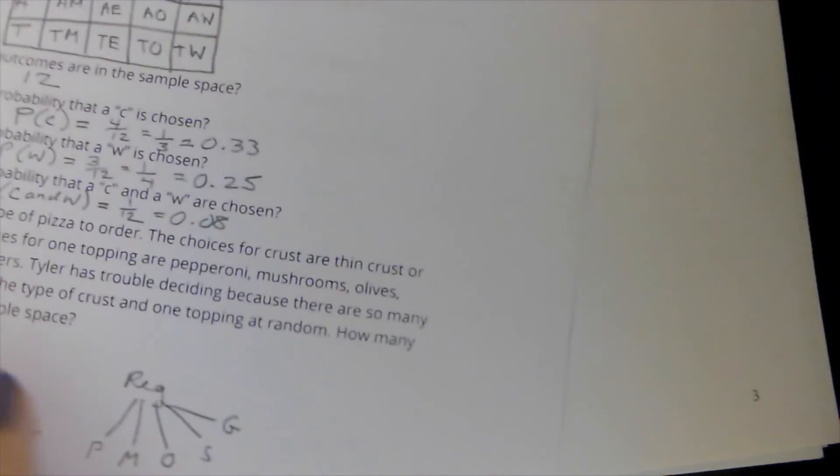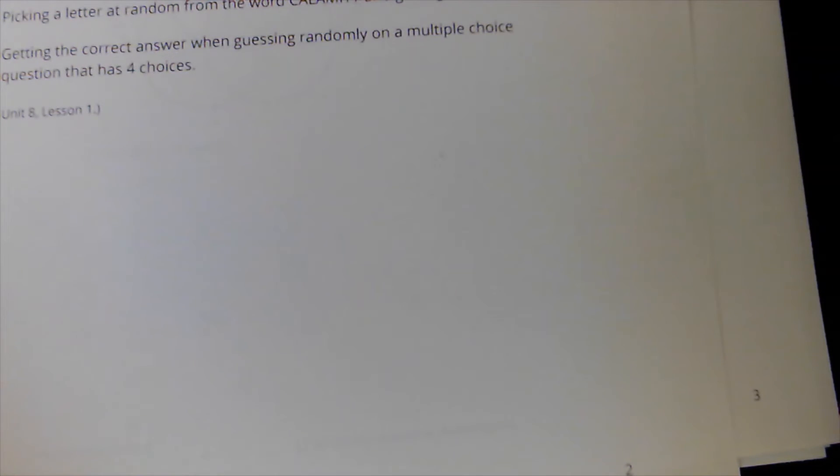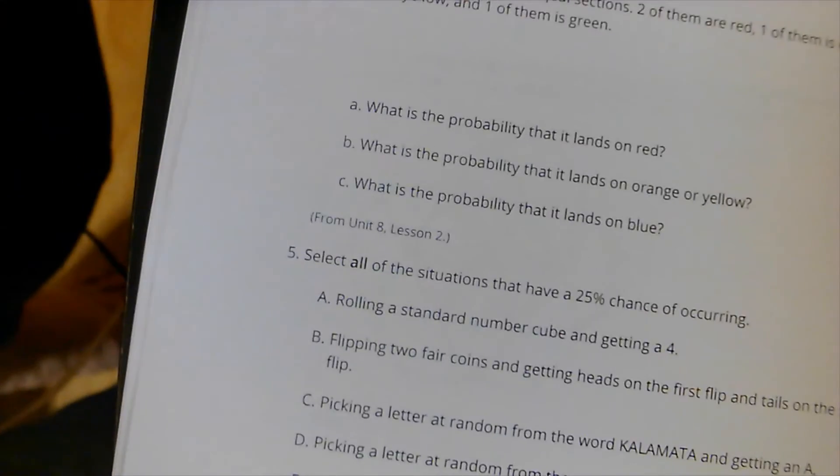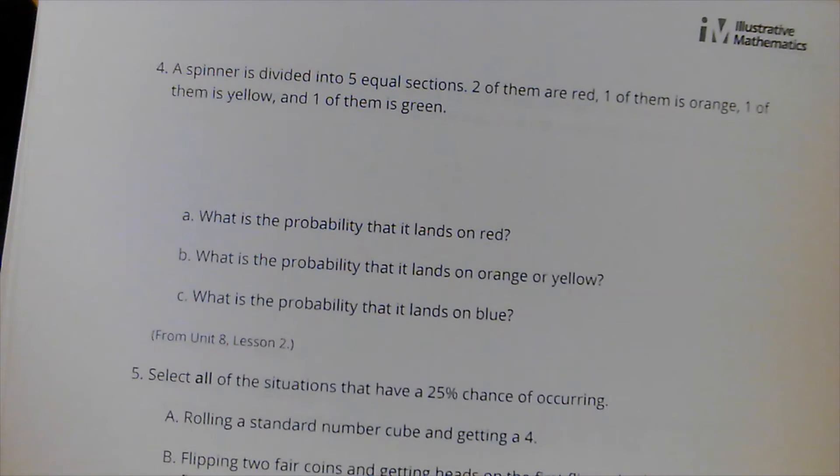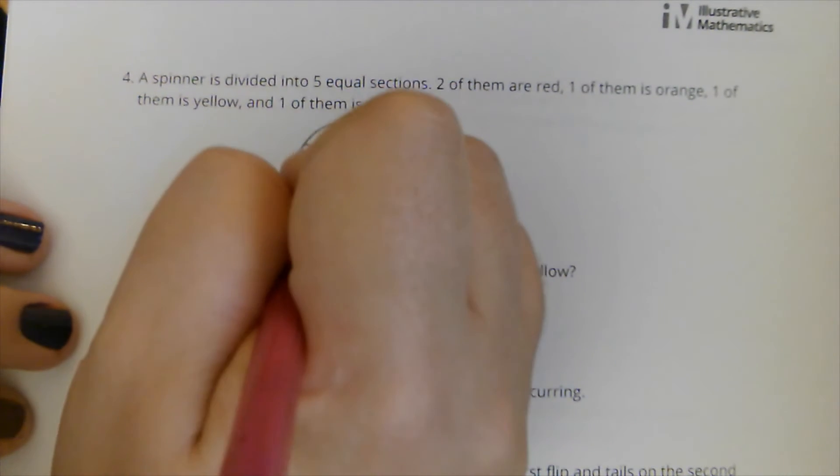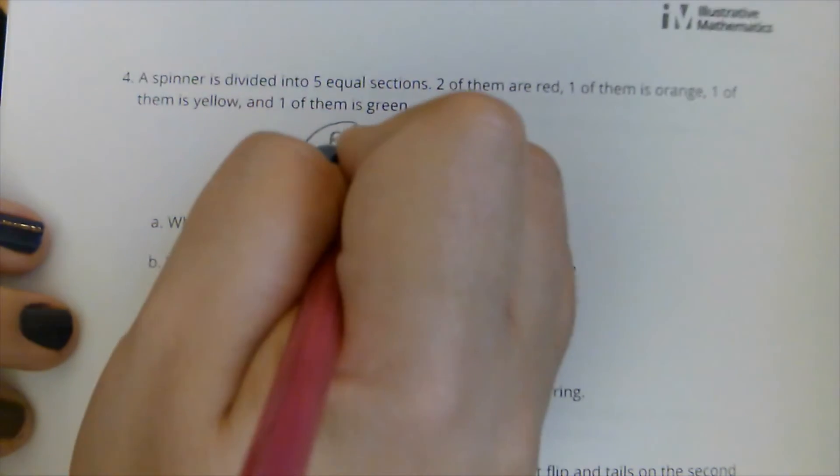So the second page here. Alright. So again, for this one, now we're looking at question number four. A spinner is divided into five equal sections. Two of them are red, one of them is orange, one is yellow, and one is green. So I'm thinking of a spinner. I'm going to do my best to divide it evenly. I've got two are red, one is orange, one is yellow, one is green.